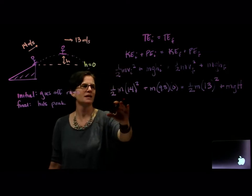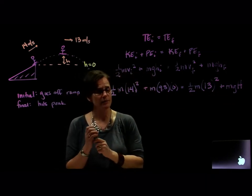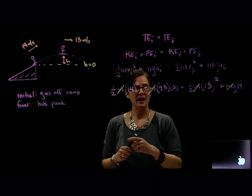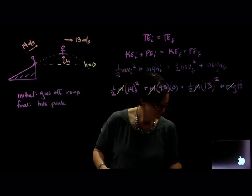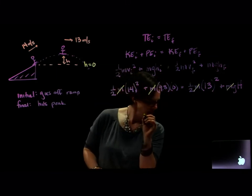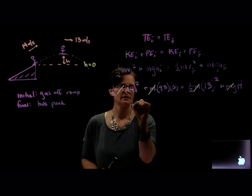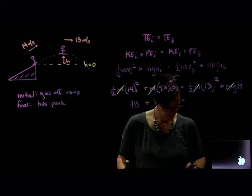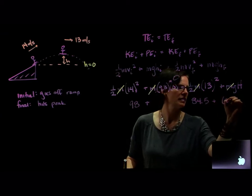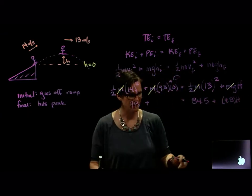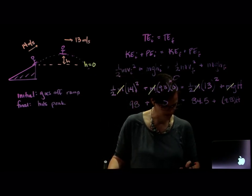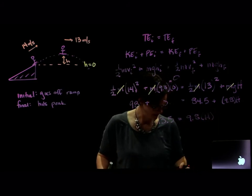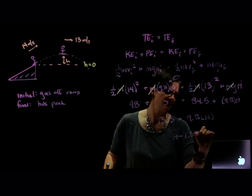Well, I have a lot of M's here. I have an M in every term. So if I divide everything by M, they're all going to cancel out. So I'm left with one half 14 squared—0.5 times 14 squared, that's 98—plus 0. Equals one half 13 squared, 84.5, plus 9.8 times capital H. So 98 minus 84.5, and I get 13.5 equals 9.8 times the height. Divide that by 9.8 and I get my height equal to 1.38 meters.